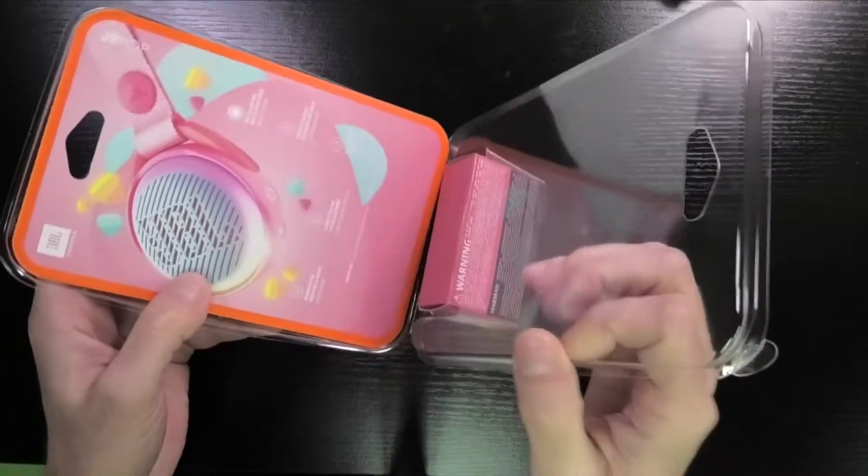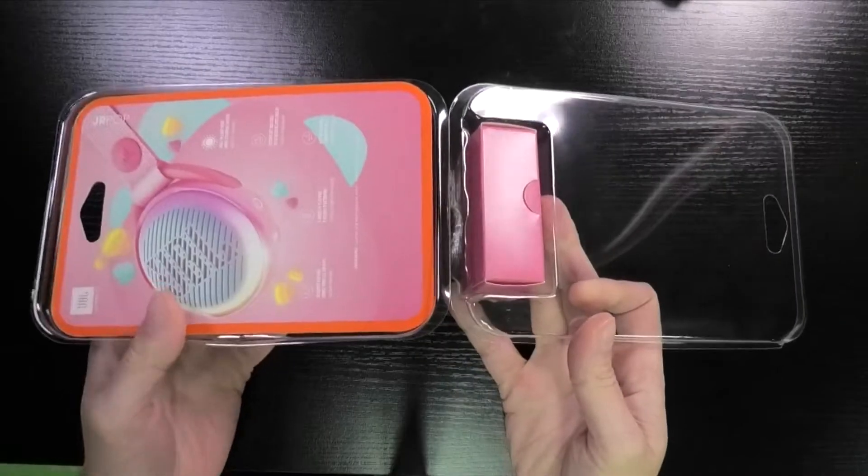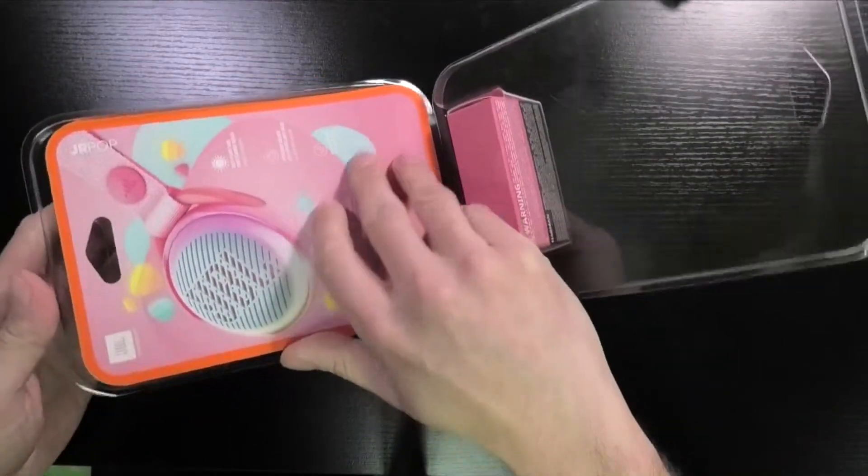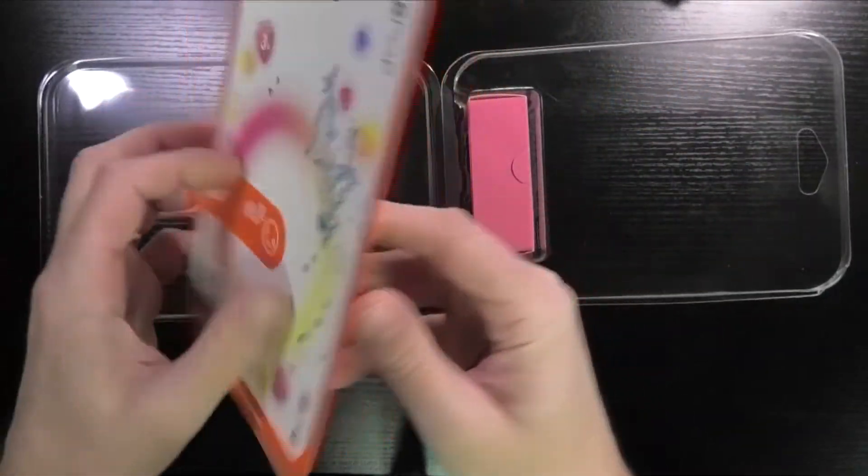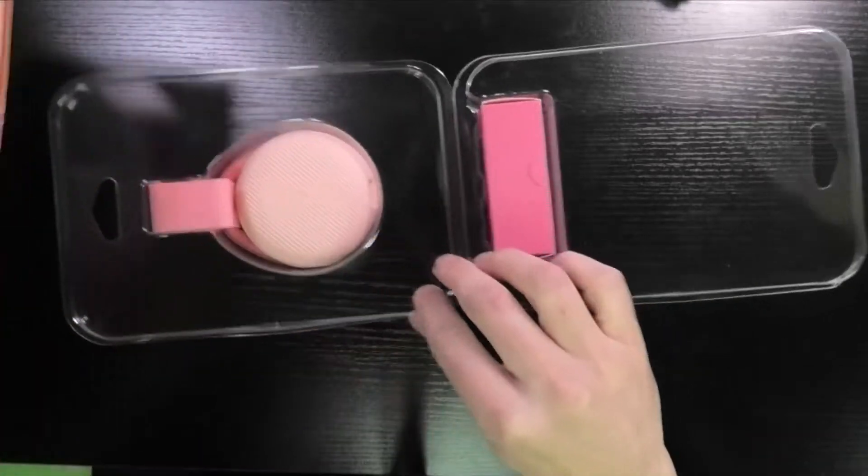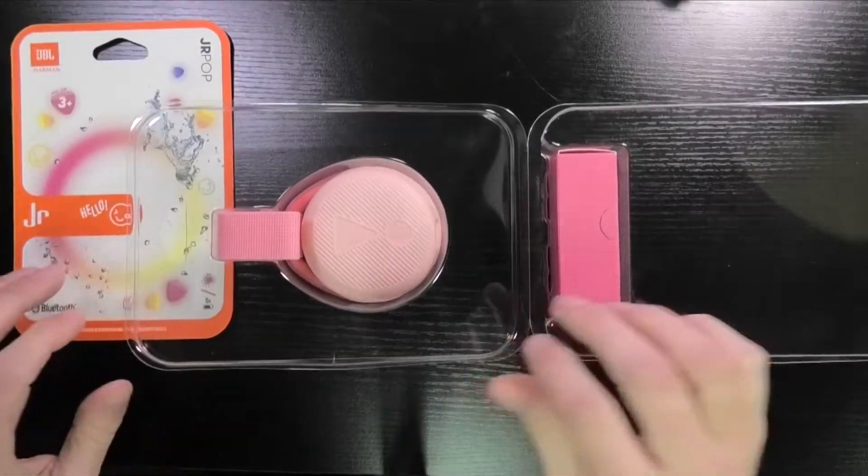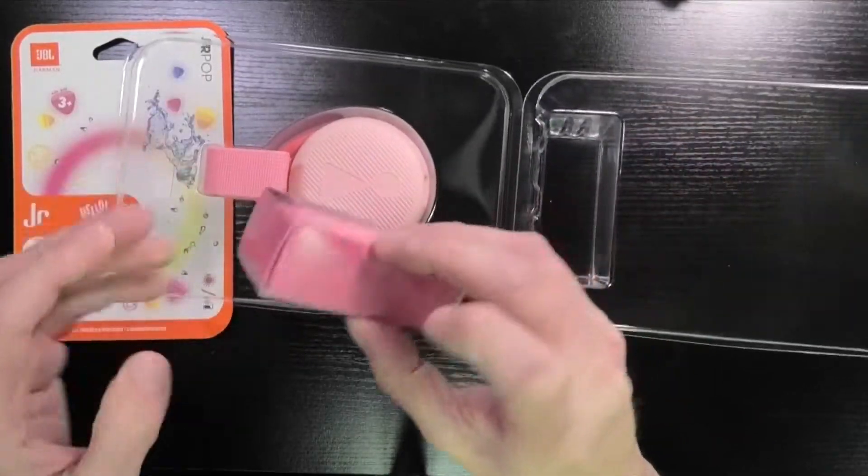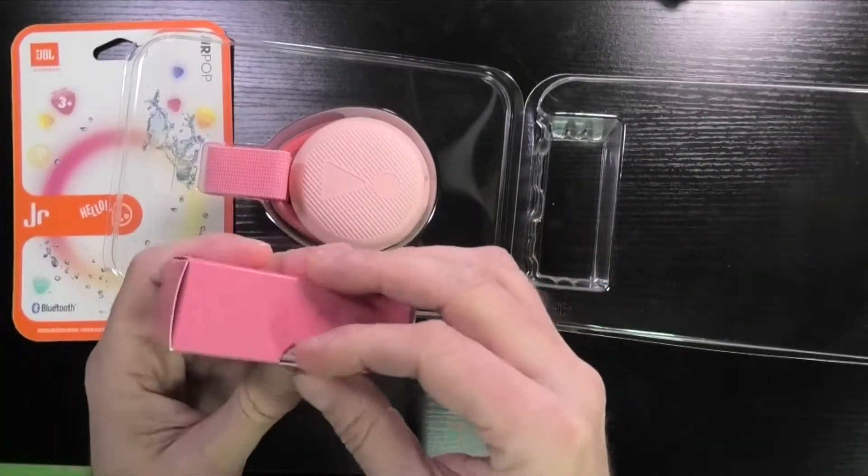And this is how you open this up. You don't need scissors or anything, this is really easy to open. Here we have this little cardboard piece with all the information on it. Then here in the back side we have this little box. Let's see what's in there.